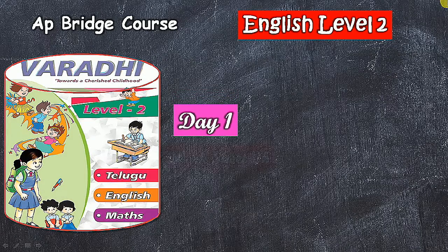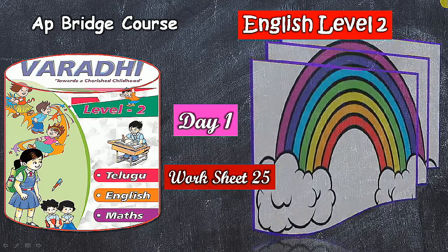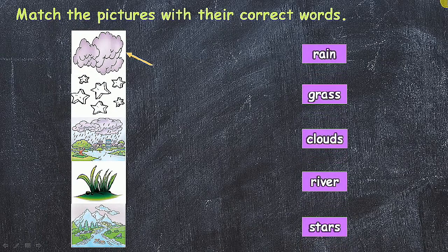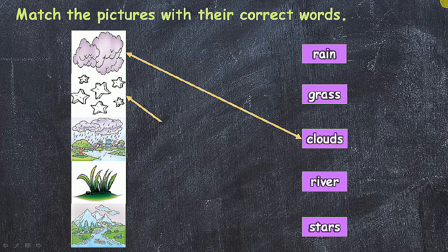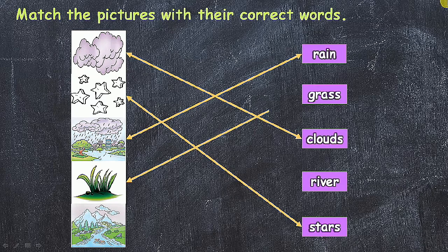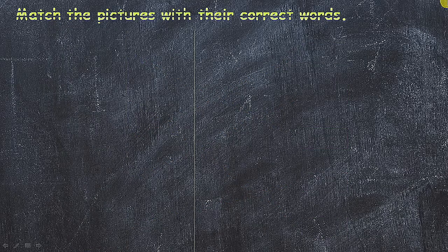Match the pictures with their correct words. Clouds, second one stars, third one is rain, and fourth one is grass. The last remaining one is river.